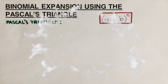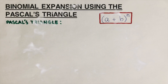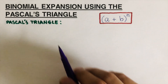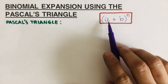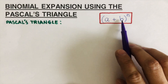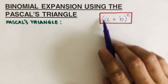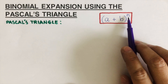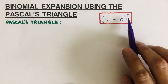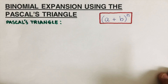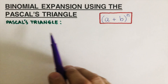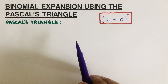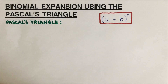Hello everyone. Today we are going to expand binomial expressions using the Pascal triangle. A binomial expression means there are two terms inside the parentheses and it's raised to the power n. We're going to use Pascal's triangle, so let's see how it looks.